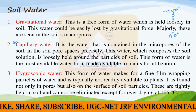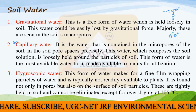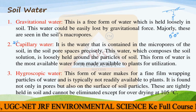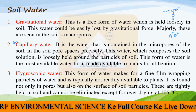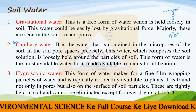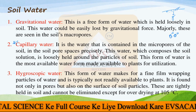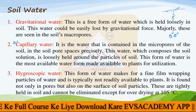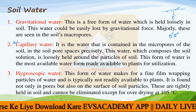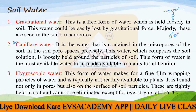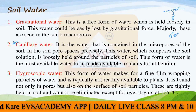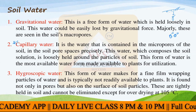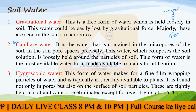Hygroscopic water cannot be used by plants, and even humans cannot remove it unless the soil is oven dried at 105°C for more than 24 hours. Only then will all the hygroscopic water go away. This is the third type of water, which is very strongly held.